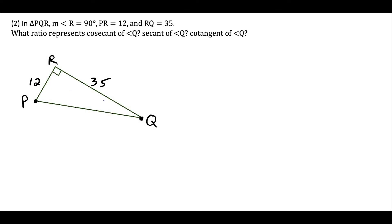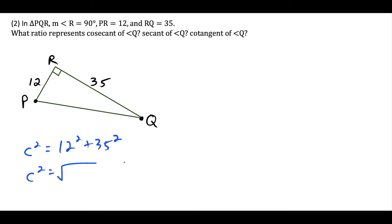For the next question, we want to find the ratios at angle Q. This time the hypotenuse of the right triangle is missing. So let's call the hypotenuse C. We can say C squared equals 12 squared plus 35 squared. Working this out: 12 squared is 144 and 35 squared is 1225. Taking the square root of both sides tells us the hypotenuse is 37 units long.